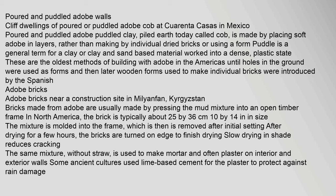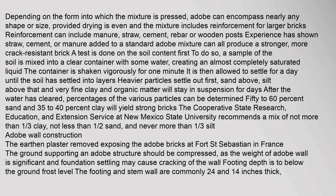Adobe bricks near a construction site in Milianfan, Kyrgyzstan. Bricks made from adobe are usually made by pressing the mud mixture into an open timber frame. In North America, the brick is typically about 25 by 36 cm. Adobe can encompass nearly any shape or size, provided drying is even and the mixture includes reinforcement for larger bricks. Reinforcement can include manure, straw, cement, rebar, or wooden posts. A test is done on the soil content: a sample of the soil is mixed into a clear container with some water, shaken vigorously for one minute, then allowed to settle for a day. Heavier particles settle out first, then sand, then silt, and very fine clay and organic matter will stay in suspension for days. Percentages of the various particles can then be determined. A mix of 50–60% sand and 35–40% clay will yield strong bricks.